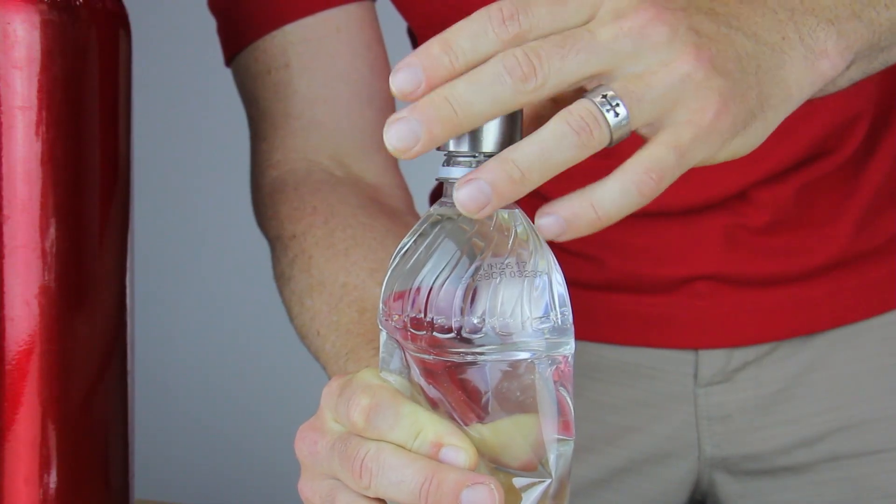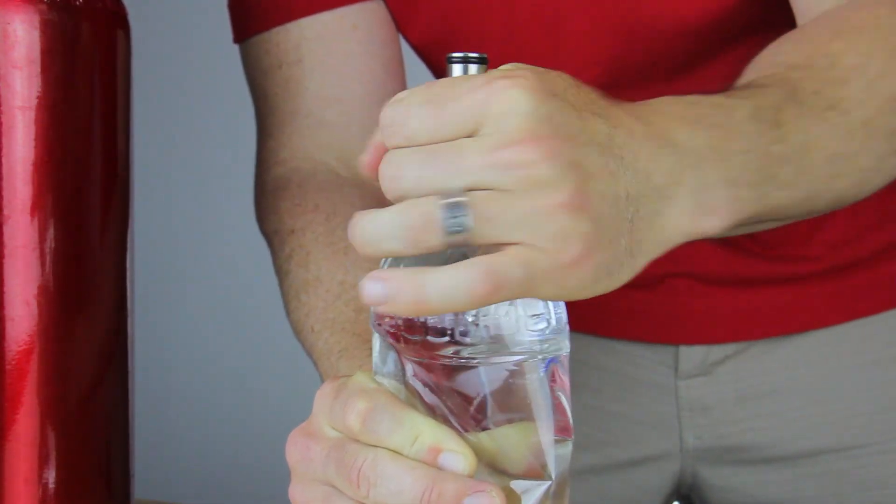Squeeze out any extra air in the bottle until the liquid reaches the top, then screw the carbonation cap onto the bottle.